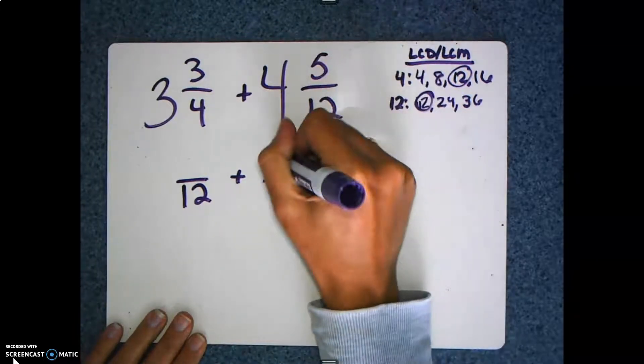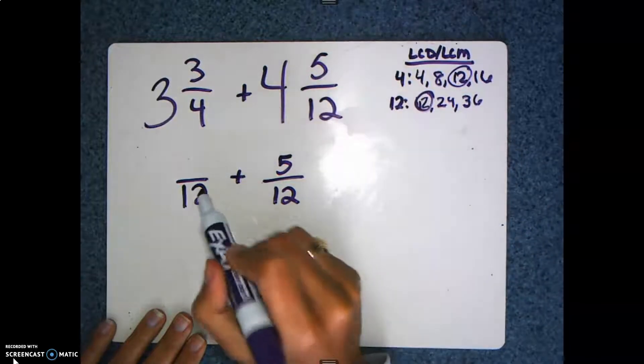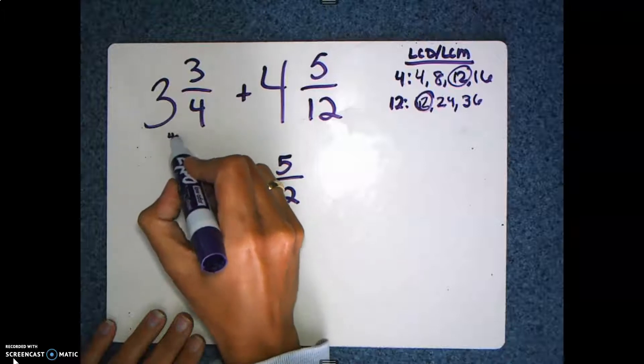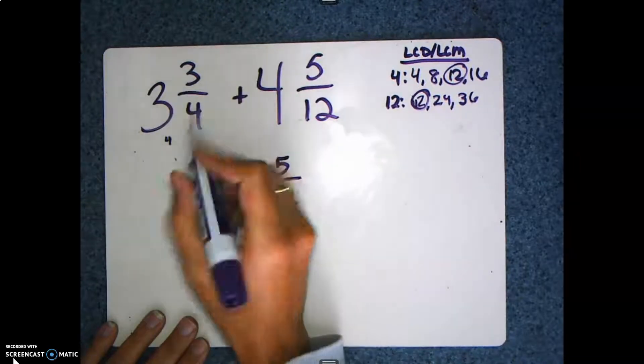Since ⁵⁄₁₂ is already in twelfths, it just comes straight down. However, ¾ needs to be converted into twelfths. So I have to think how many times 4 times what will give me 12.